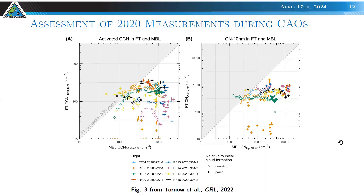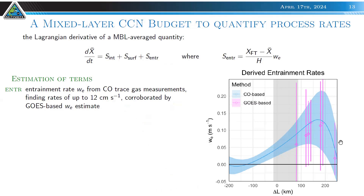This pattern is typical across roughly eight good flights: a scatter plot of boundary layer concentration versus free troposphere concentration always falls below the 1:1 diagonal, meaning the free troposphere acts only as a sink, not a source. This holds for both CCN data and a CN counter counting all particles greater than 10 nm. We then prepare an observational Lagrangian aerosol budget, where boundary layer quantity H evolves due to internal sources, surface sources, and entrainment — the latter obtained from CO trace gas measurements where no surface or internal sources exist.